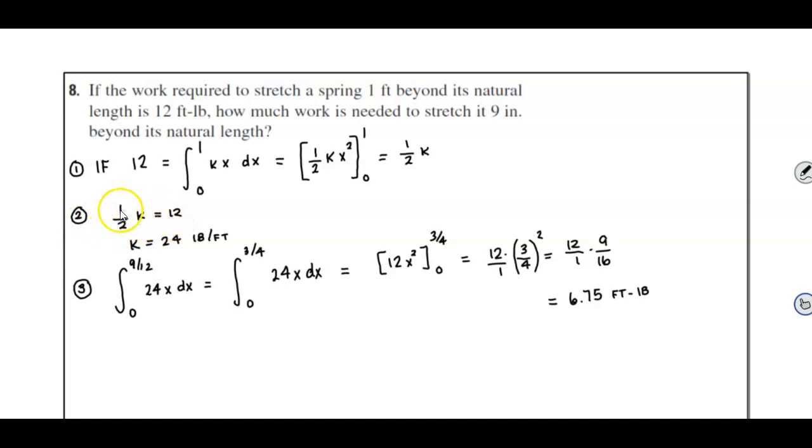One-half k is equal to 12. Multiply both sides by two. Now k is going to equal 24 pounds per foot.